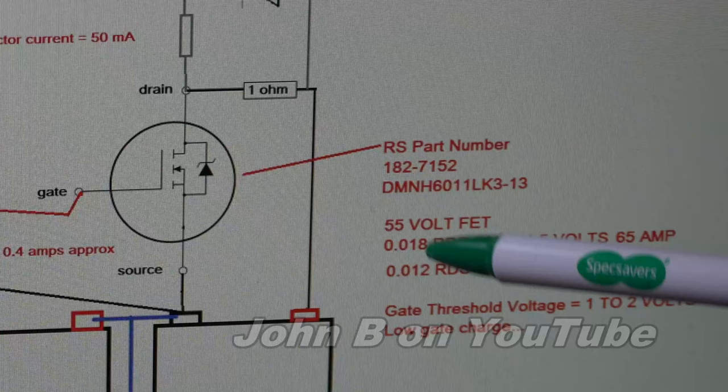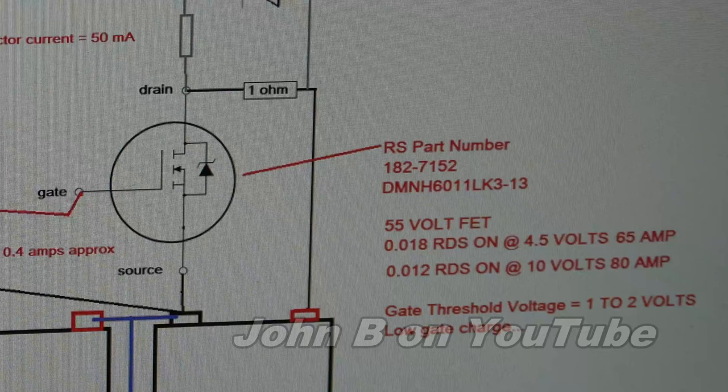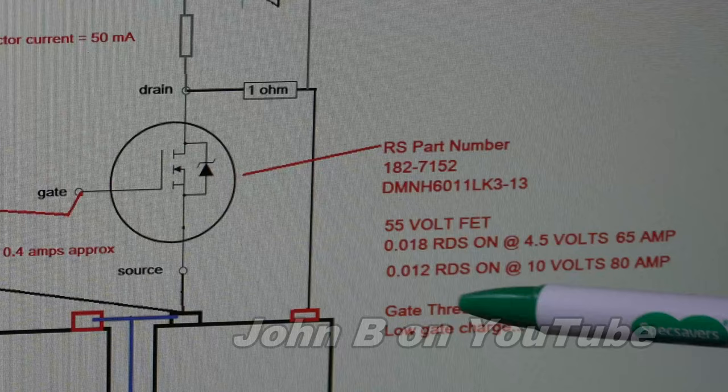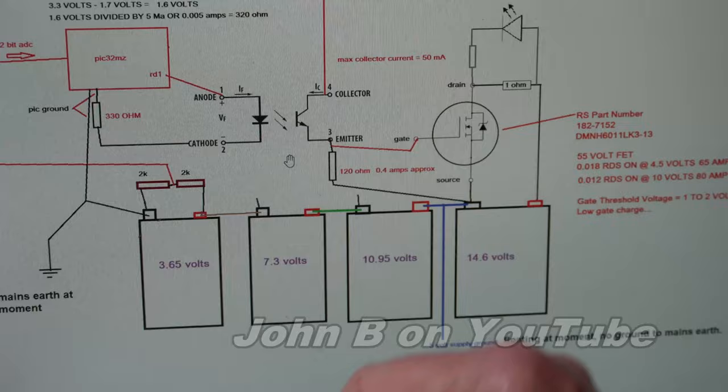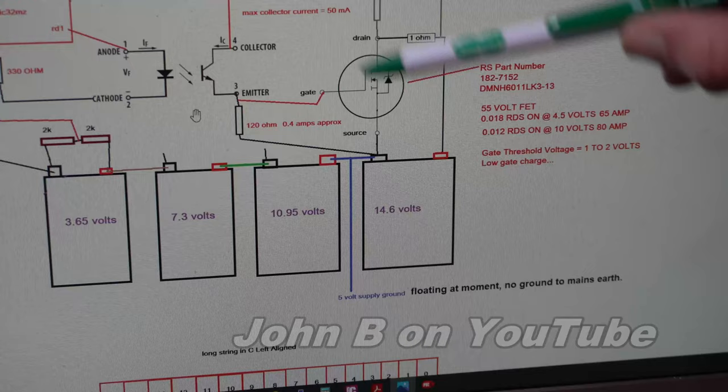RS part number, 1827152. It's a 55 volt FET, depending on how you drive the gate. 65 amp at 4.5 volts, 18 milli ohm RDS on. If you drive it up to 10 volts on a gate, 80 amp. And the RDS on comes down to 12 milli ohms. The gate minimum threshold is 1 to 2 volts. But have a quick look at this and notice, so my PIC is currently connected to the programmer. And that's connected to the computer earth and mains earth, shown here.